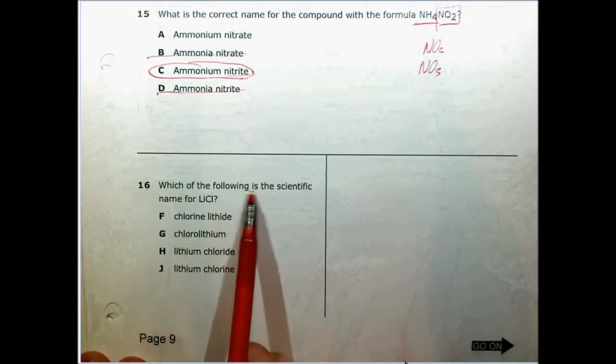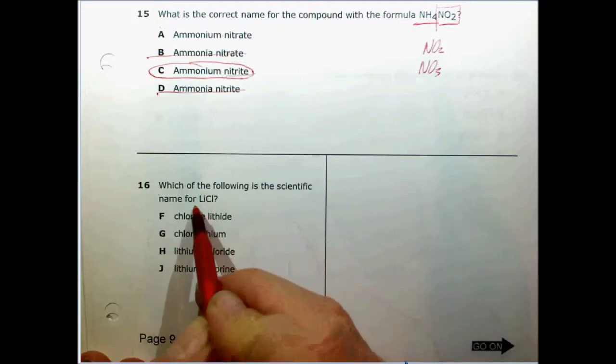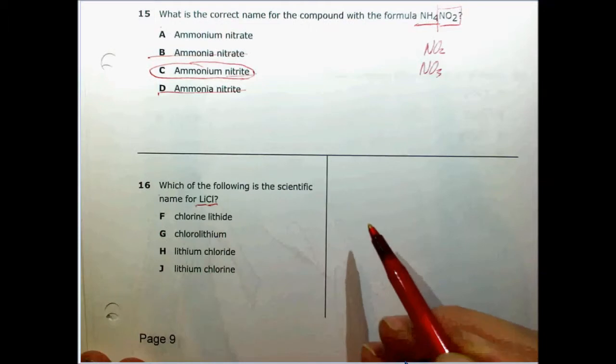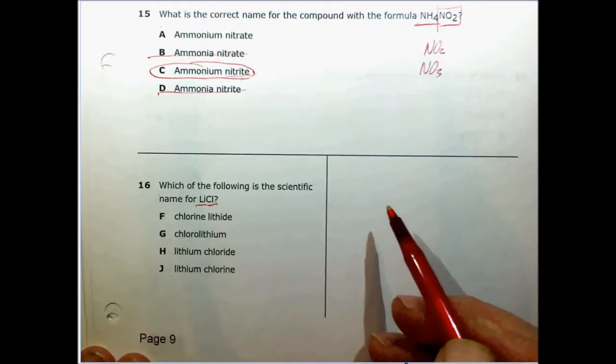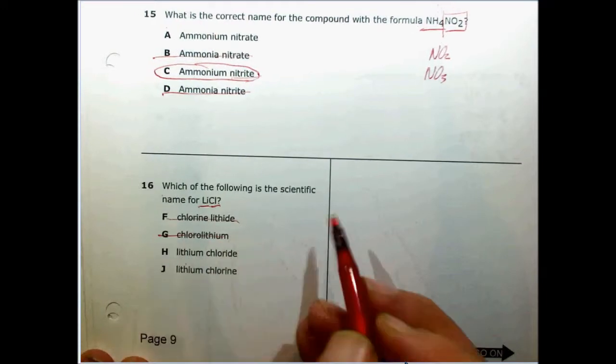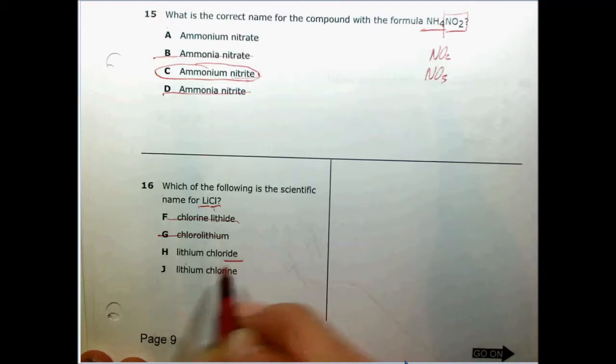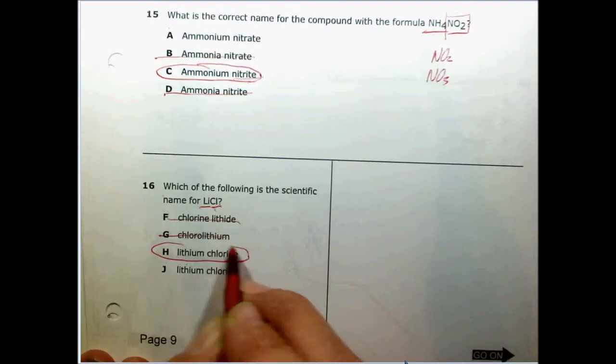Which of the following is the scientific name for LiCl? According to our rules for a metal and a non-metal, that's a binary ionic compound. We name the metal lithium, so we can get rid of these two, and then we name the non-metal changing the ending to -ide. So H must be the correct answer.